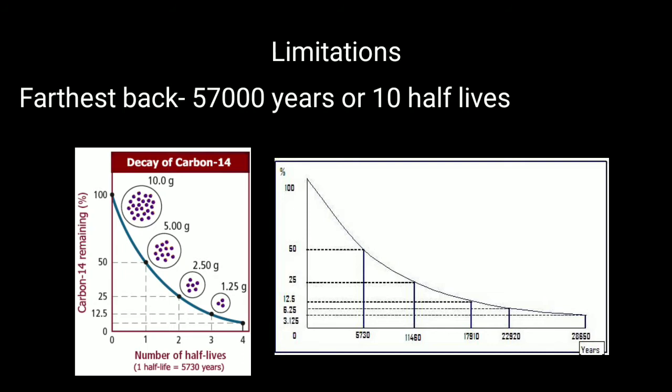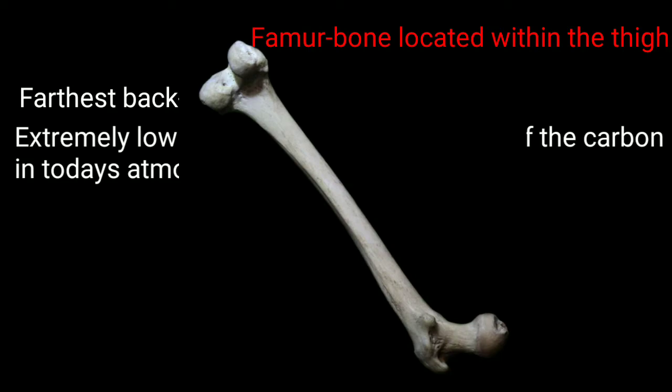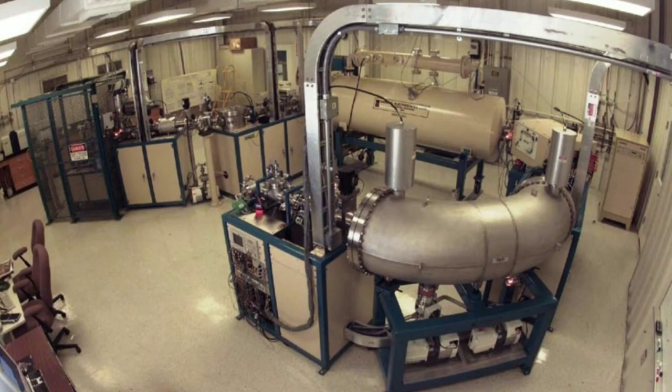The farthest back C14 can be used is about 10 half-lives or 57,000 years. The second difficulty arises from the extremely low abundance of C14, making it incredibly difficult to measure and extremely sensitive to contamination. In the early years of radiocarbon dating, a product's decay was measured, but this required huge samples, for example half of a human femur. Many labs now use an accelerator mass spectrometer, a machine that can detect and measure the presence of different isotopes to count the individual C14 atoms in a sample.